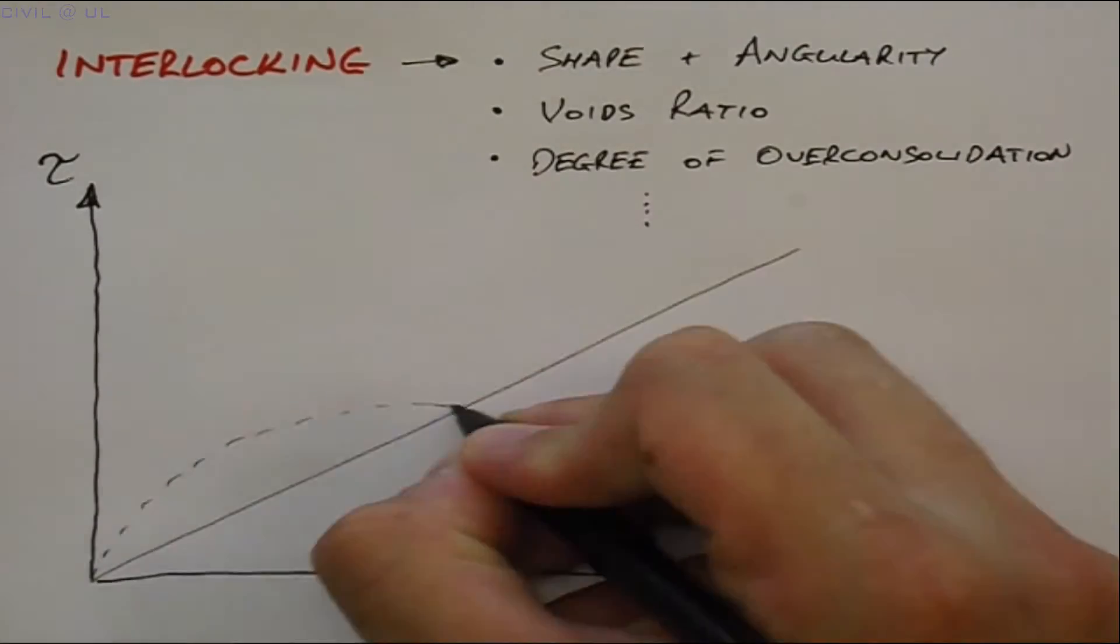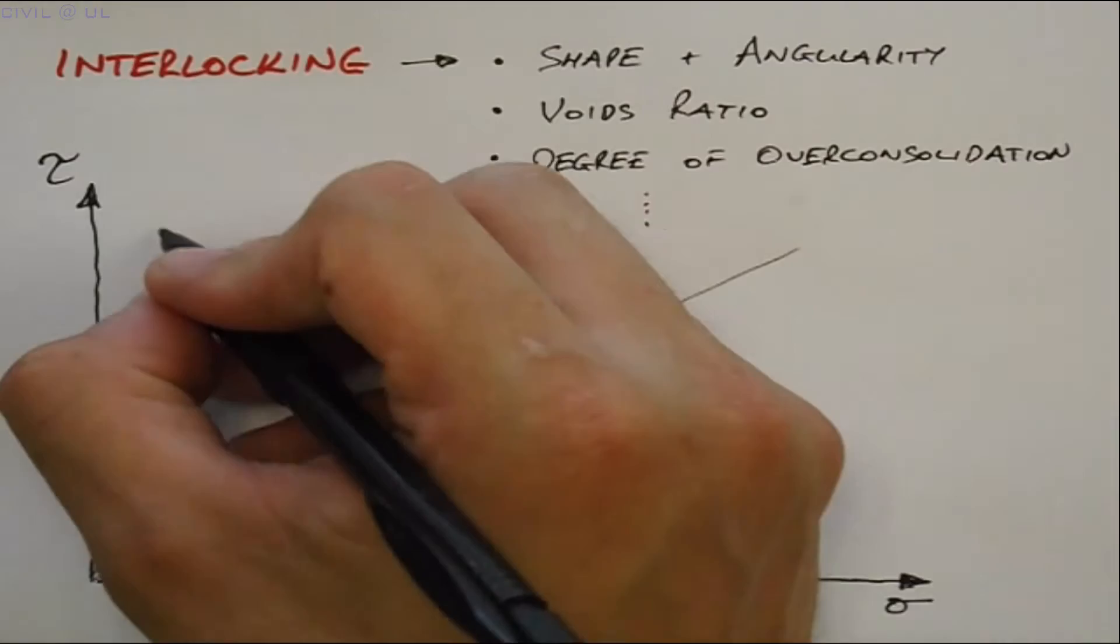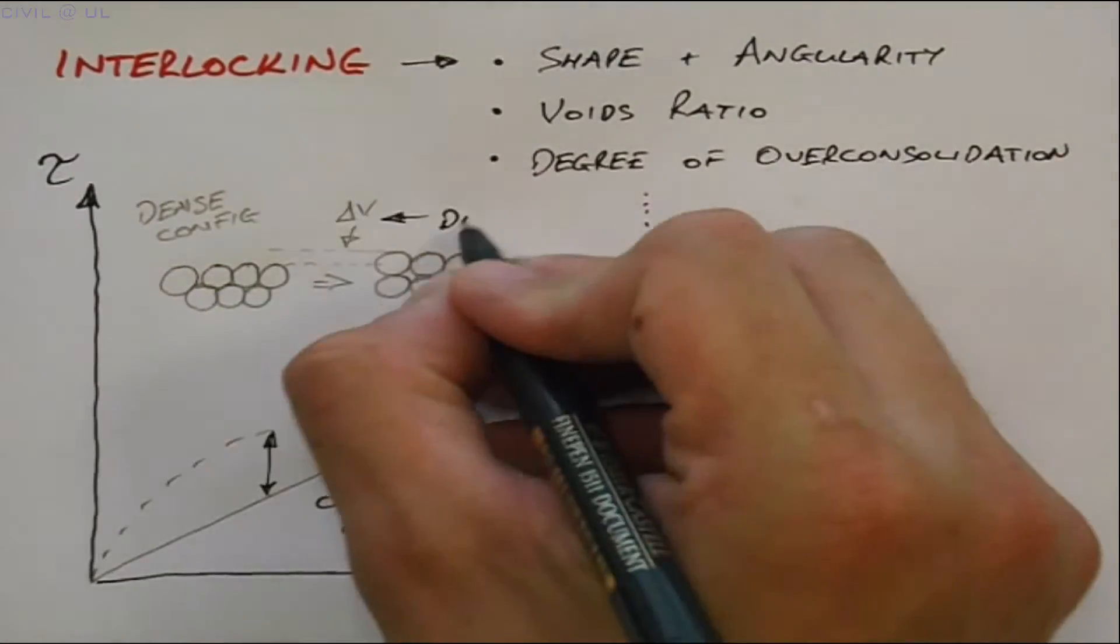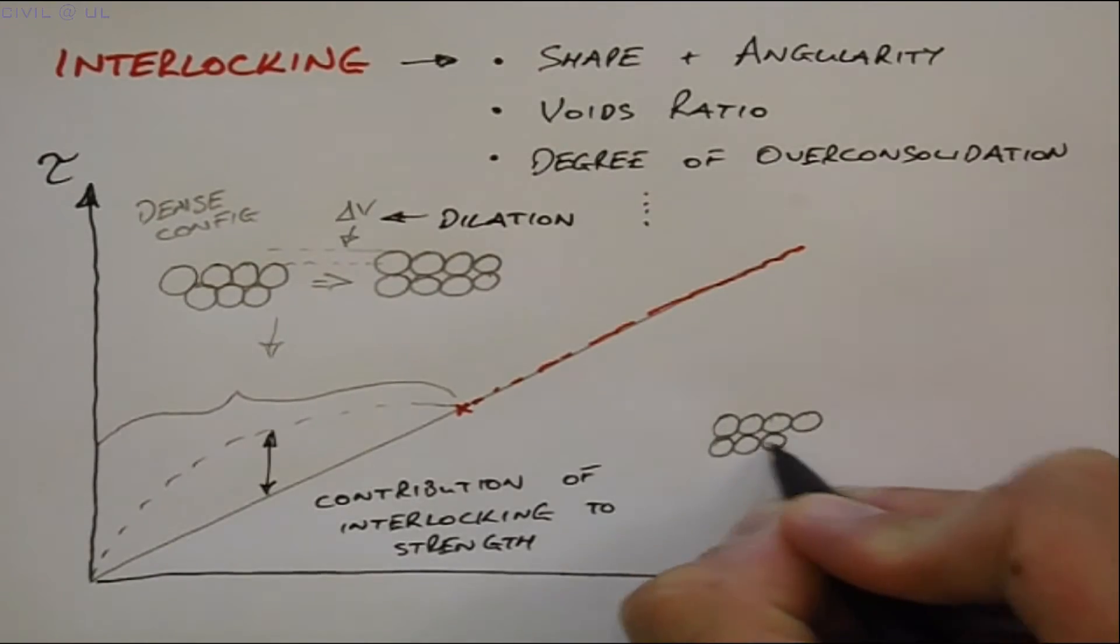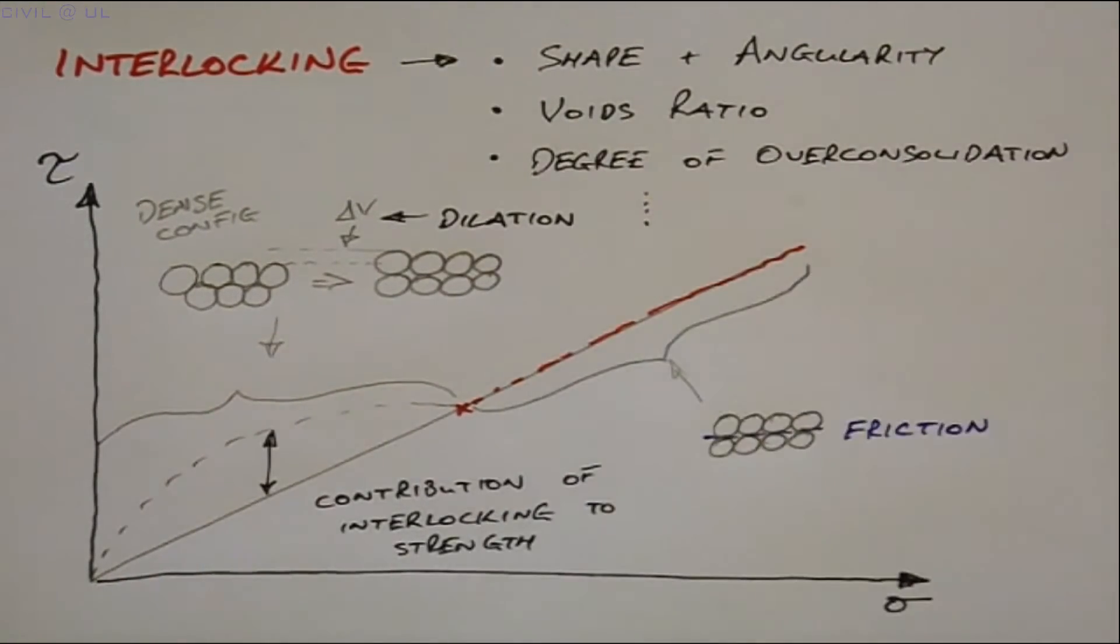The phenomena of interlocking is responsible for the initial curve shape of the failure line seen when we test the strength of dense soils. We note that, at a certain normal stress, the interlocking effects disappear and the soil behaviour becomes purely frictional. We will now concentrate on this material or fundamental strength of soil.